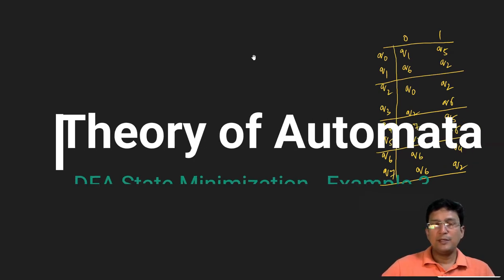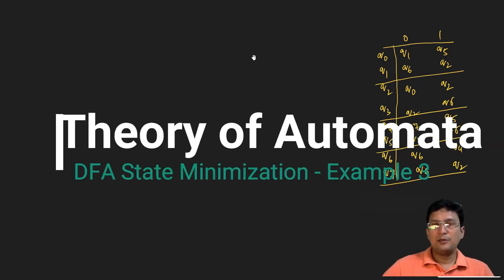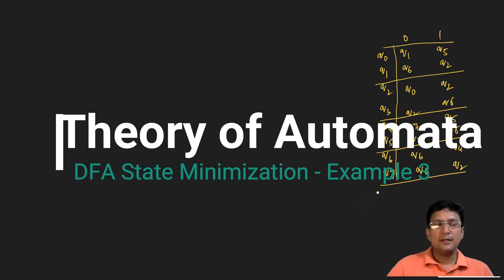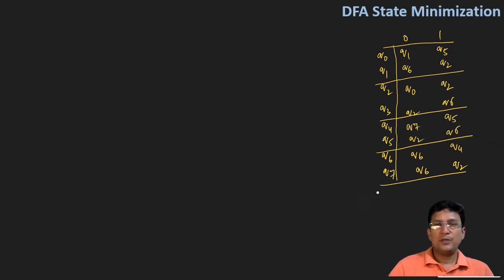Hello everyone, we will take more examples to solve and understand how state minimization is done for the DFA. Given the transition table of a DFA, q0 is the start state and q2 is the final state.